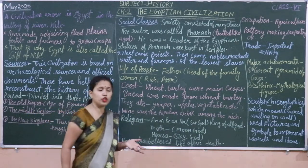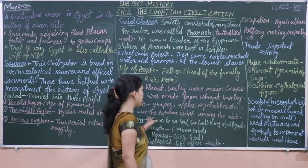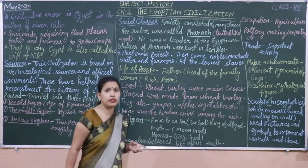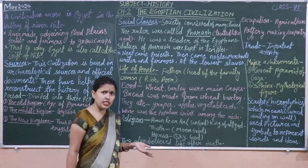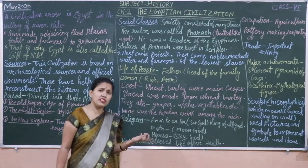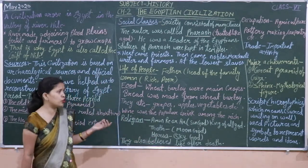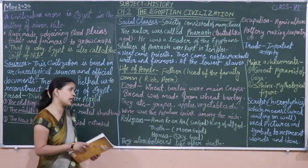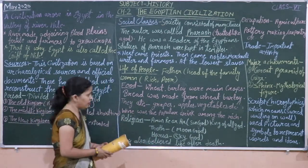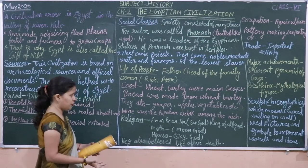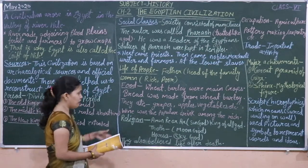Wine was a popular drink among the rich. For those who were rich, wine was a popular drink. At any festival, wine could be drunk. It was a popular drink.